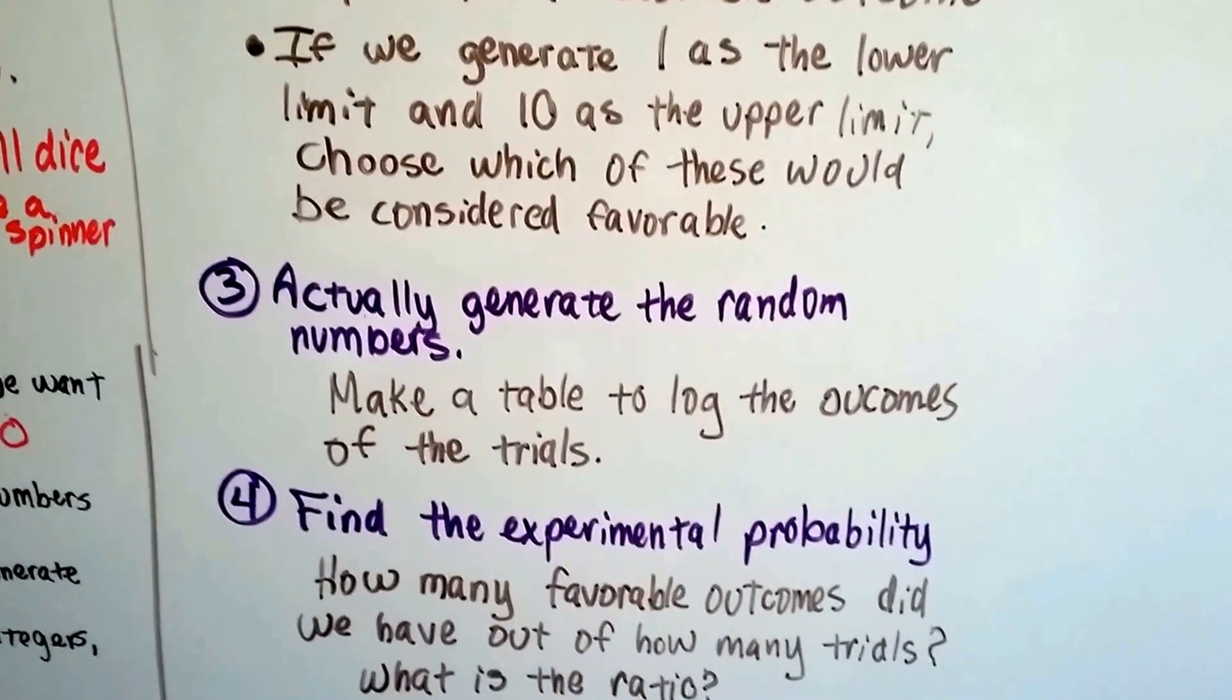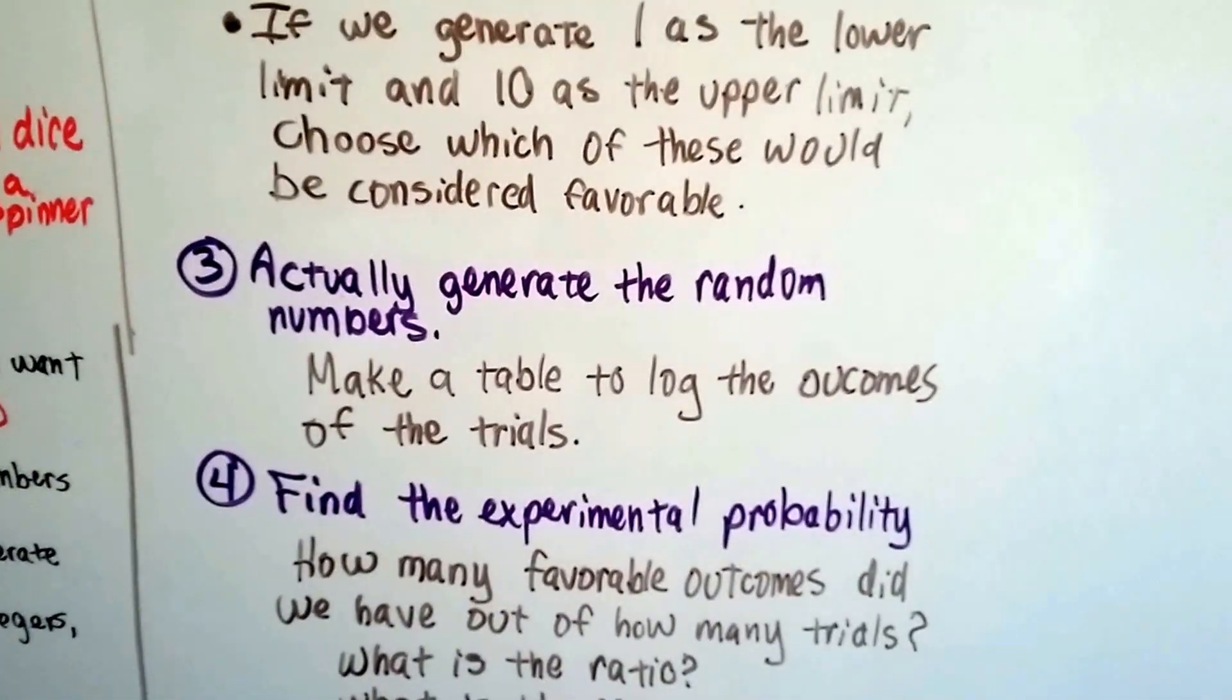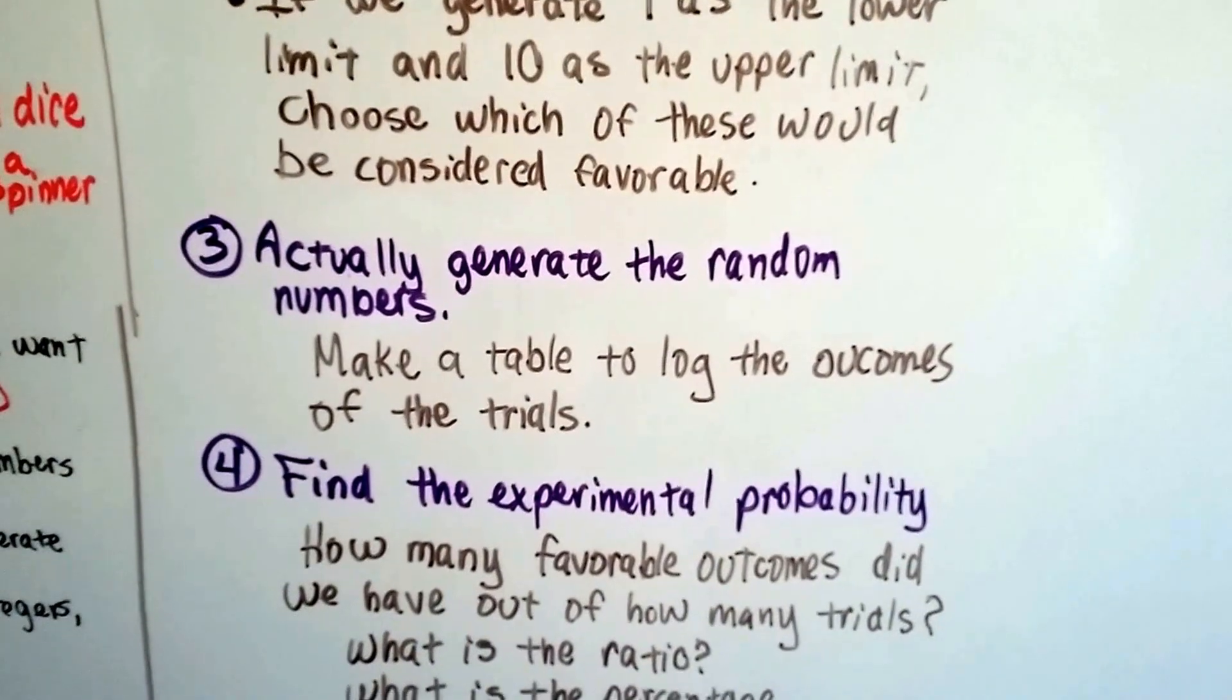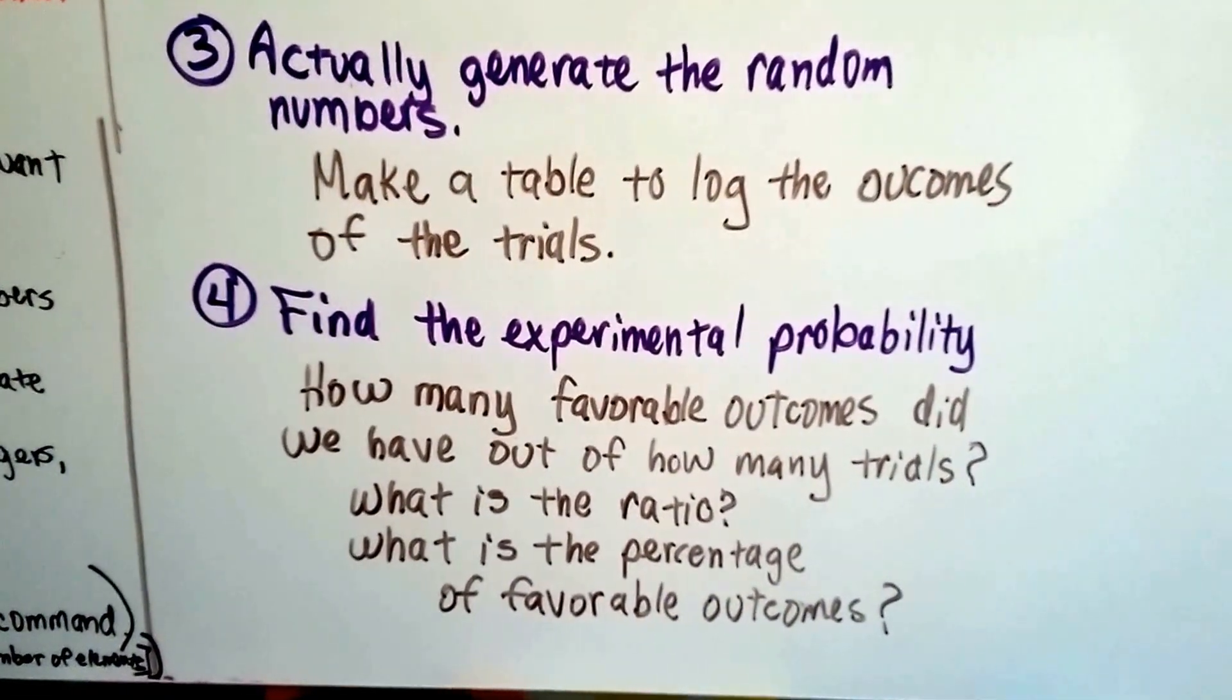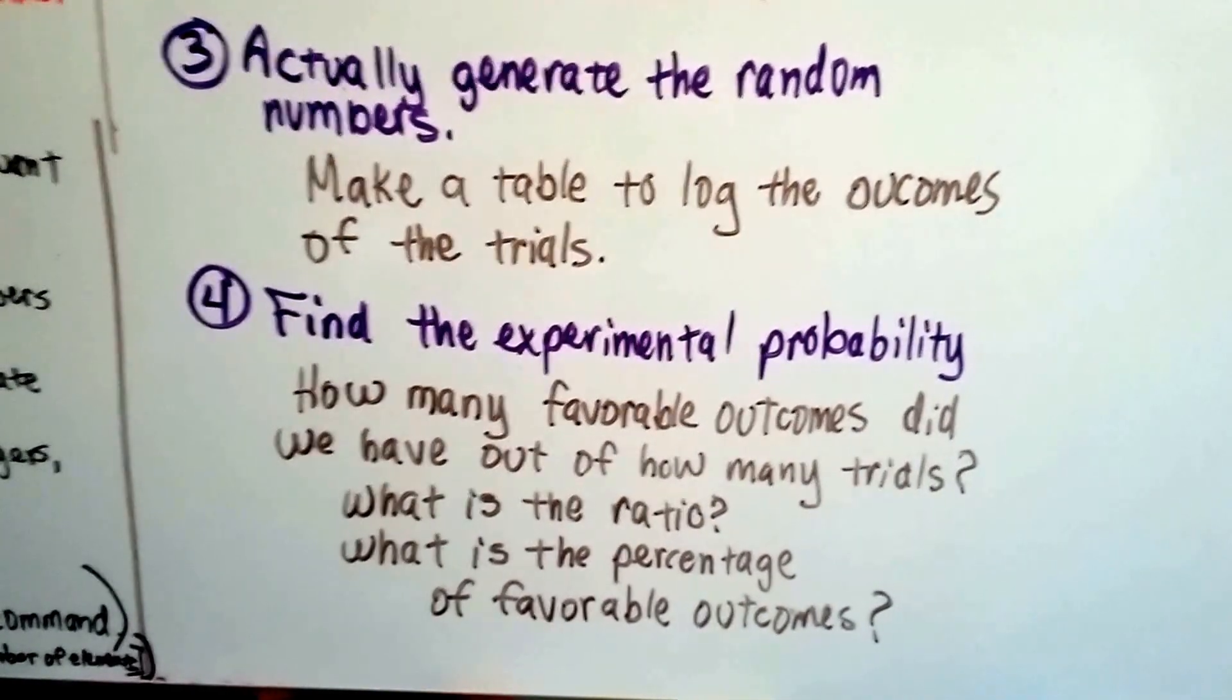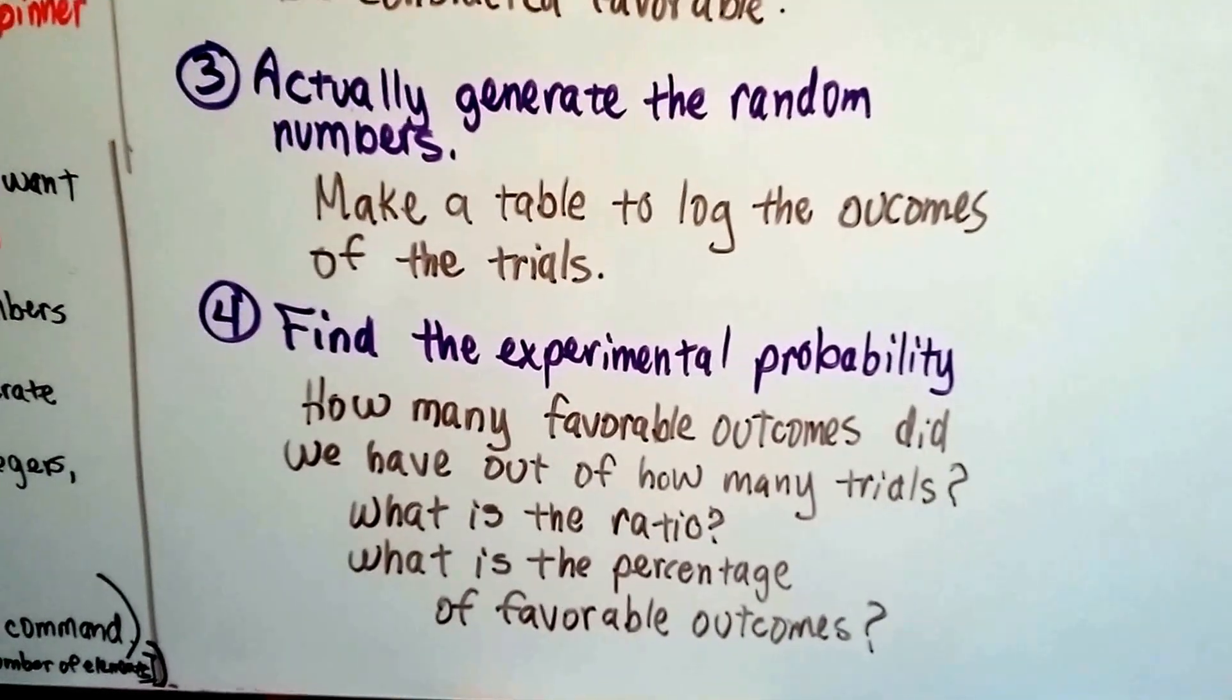Then you actually generate the random numbers. You make a table to log the outcomes of all the trials. You find the experimental probability. How many favorable outcomes did we have out of how many trials? What's the ratio? What's the percentage of favorable outcomes?